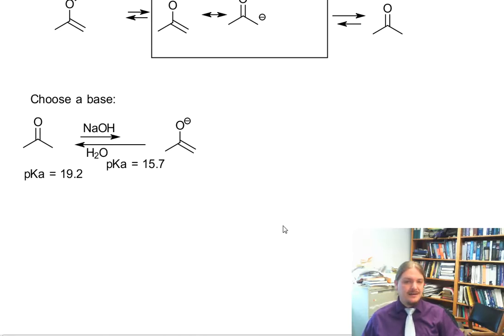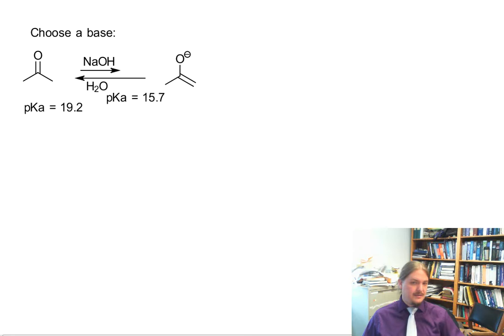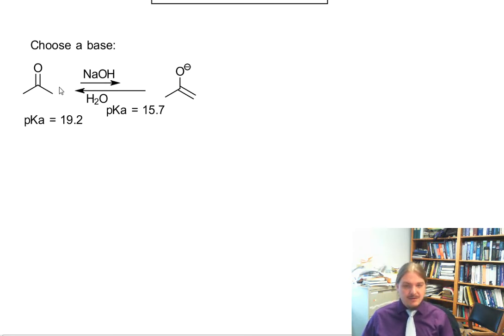And so you're not going to get a lot of enolate anion in acetone, but you're going to get some in sodium hydroxide solution in water, and that might be good enough for some applications. However, if you wanted to get almost complete and total conversion, you need to use a base that is much stronger.